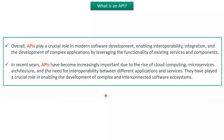In recent years, APIs have become increasingly important due to the rise of cloud computing, microservices architecture, and the need for interoperability between different applications and services. APIs have played a crucial role in enabling the development of complex and interconnected software ecosystems.